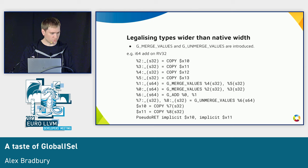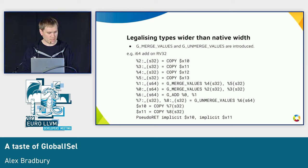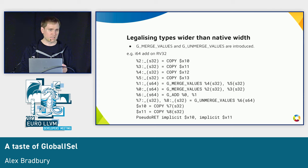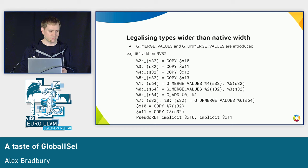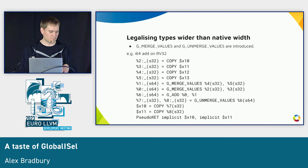For legalizing types that are wider than native width, Global ISel introduces extra instructions to help represent that — G_MERGE_VALUES and G_UNMERGE_VALUES — so you can produce an S64 value and then split it back into two separate 32-bit values so it can be returned.